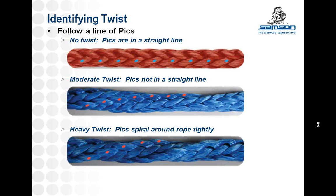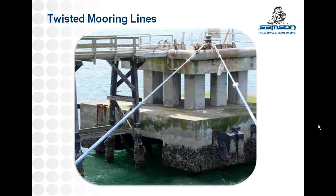Excessive twist is easy to spot out in the field as well. In this mooring example, there's an obvious twist in the rope — the lines of picks are spiraling around the axis of the rope. This would be considered a moderately twisted rope and would surely see some level of strength loss. It's important to note that if you're used to looking at a wire rope or a twisted synthetic rope, those ropes naturally look twisted due to their construction. However, a braided rope should have parallel crowns running down its length, so if a braided rope looks twisted like a wire rope, that generally means there's excessive twist in it.